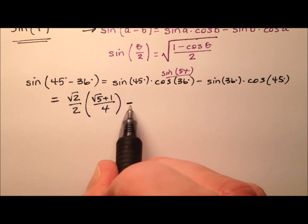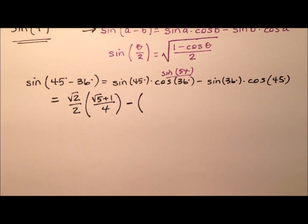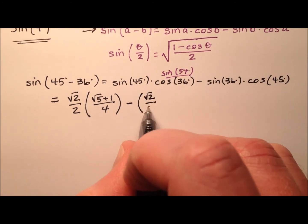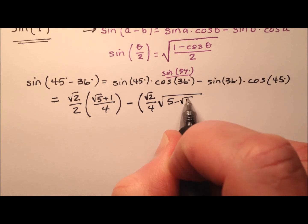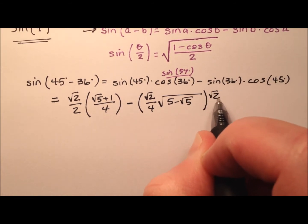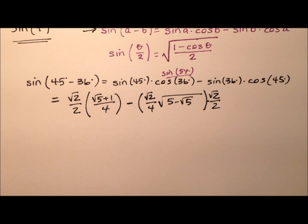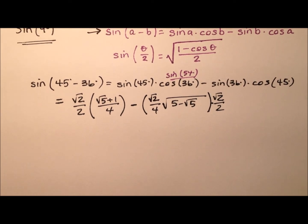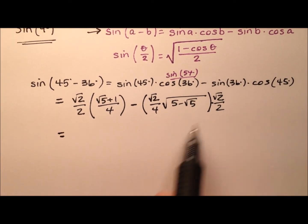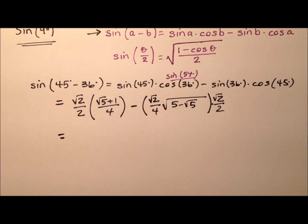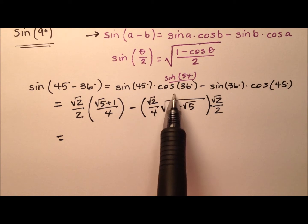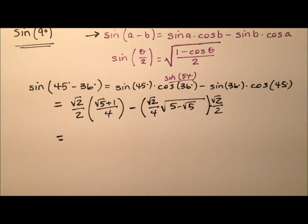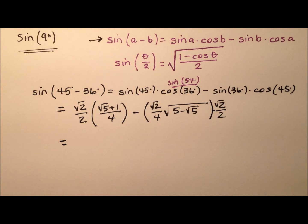And from that we'll subtract the sine of 36 degrees — we worked this out in a previous video as well — and then times the cosine of 45 degrees, which is the square root of 2 over 2. So basically it's just a matter of simplifying this as much as we can. Finding the sine of 54 and the sine of 36 weren't as easy, but you can check those videos out.